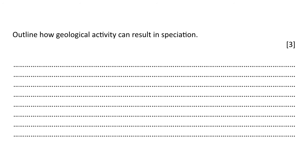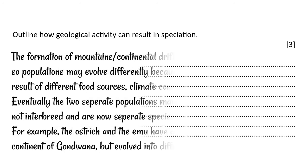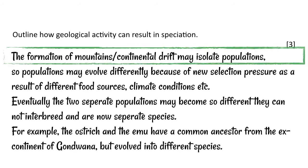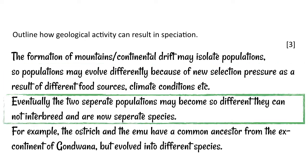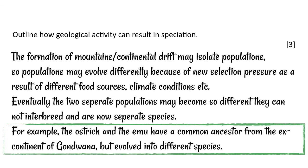Ways you might get assessed on this: outline how geological activity can result in speciation. Mention the formation of mountains or continental drift isolating populations, and give information about one or several methods by which isolation might occur. Populations may evolve differently because of new selection pressures — for example, different food sources or climate conditions. Eventually, the two separate populations may become so different they cannot interbreed and are now separate species. Always give examples if you can.